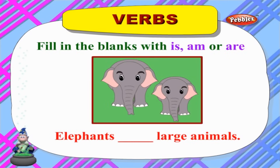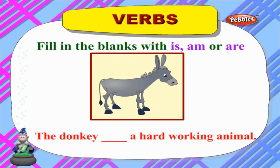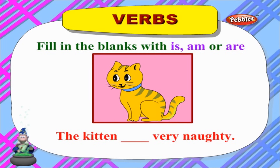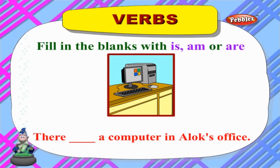'Elephants ___ large animals' — 'Elephants are large animals.' 'The donkey ___ a hard-working animal' — 'The donkey is a hard-working animal.' 'The kitten ___ very naughty' — 'The kitten is very naughty.' 'I ___ going to the zoo' — 'I am going to the zoo.' 'There ___ a computer in Alok's office' — 'There is a computer in Alok's office.'